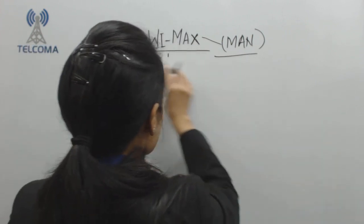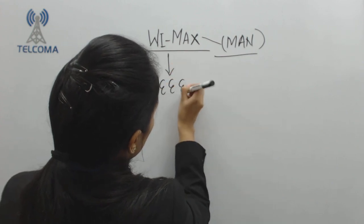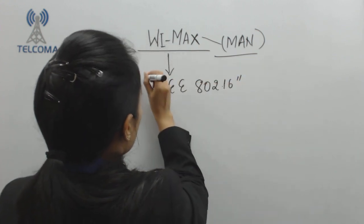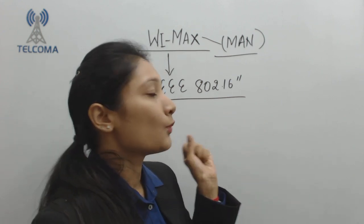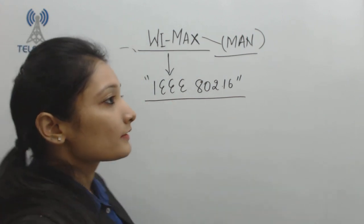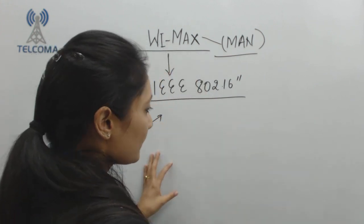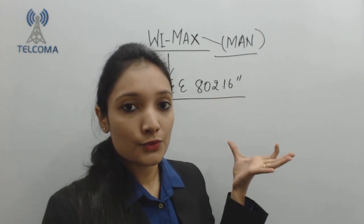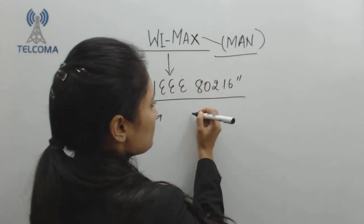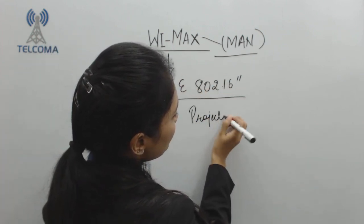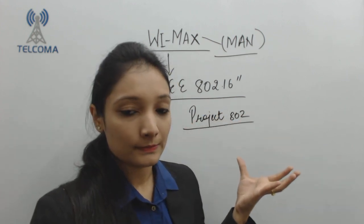WiMAX evolved from the technical specification IEEE 802.16. IEEE stands for the Institute of Electrical and Electronics Engineers. In 1999, this society was set up to study various wireless broadband techniques. Project 802 was started by a computer association for the standardization of wireless networks.